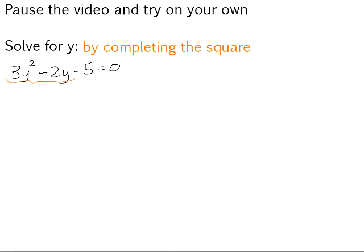Remember, as in the previous example, this trinomial as it stands is not a perfect square currently. So we are going to take the 3y squared and minus 2y, and we are going to create a perfect square trinomial with it. So we add 5 to both sides.